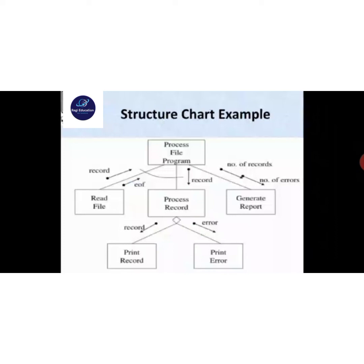An example of a structure chart: the process file program is divided into three parts — read file, process record, and generate report. The process record further contains two subdivisions: print record and print error. The main process file program is the parent, and read file, process record, and generate report are its child modules. Process record then has two more children: print record and print error — storing records and printing errors respectively.